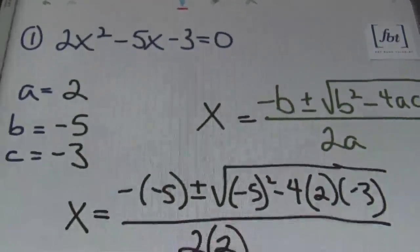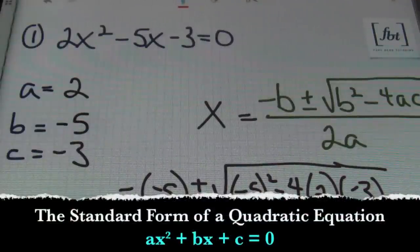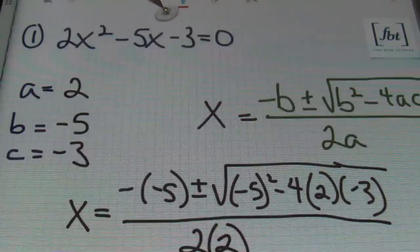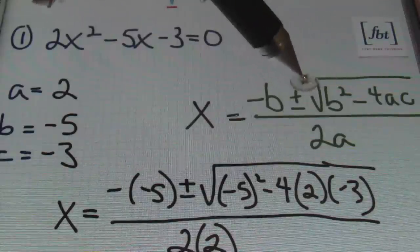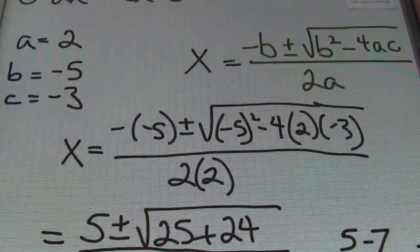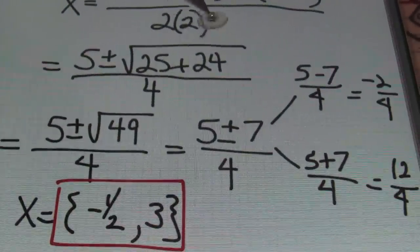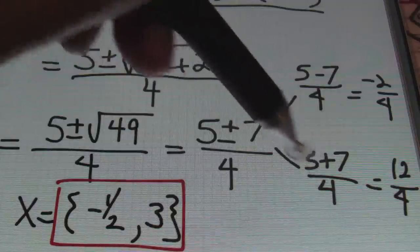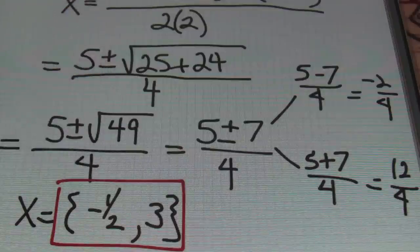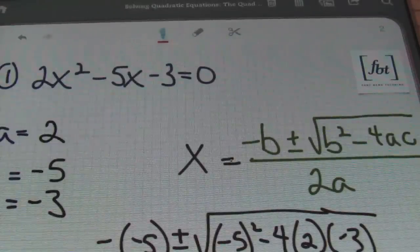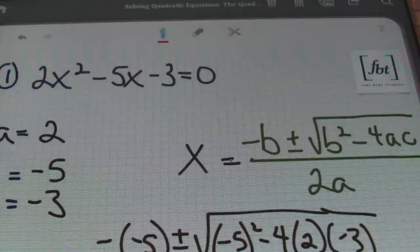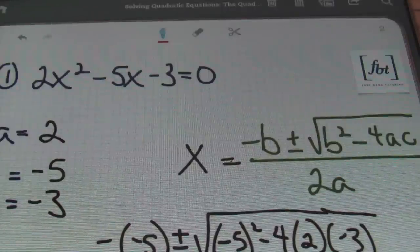Recapping: we started with 2x squared minus 5x minus 3, already set equal to zero, giving a=2, b=negative 5, c=negative 3. We wrote the formula, plugged in, simplified, remembered that plus or minus means two separate conditions, and arrived at x equals negative 1 half and 3. If plugged back into the original equation, those values equal zero. These answers are called roots, solutions, zeros — all of those terms mean the same thing when solving a quadratic equation.